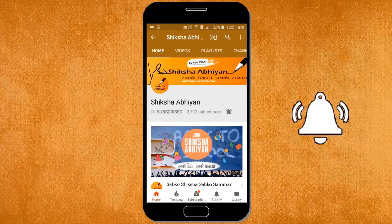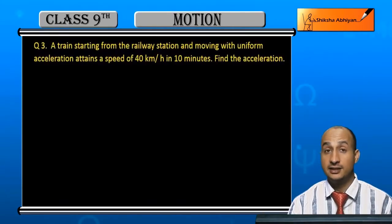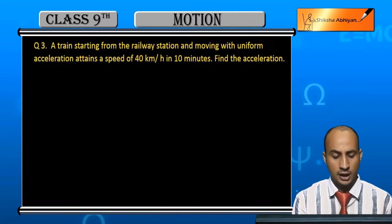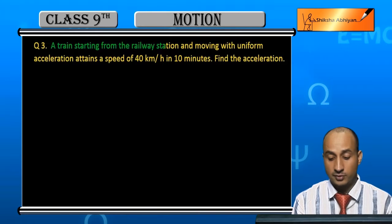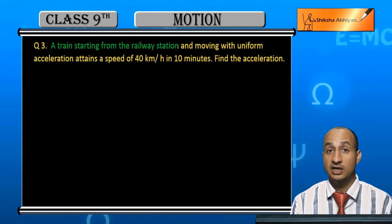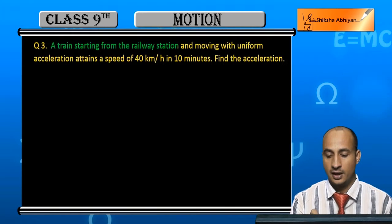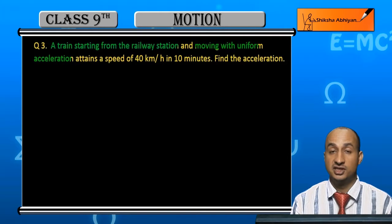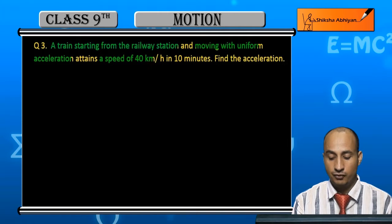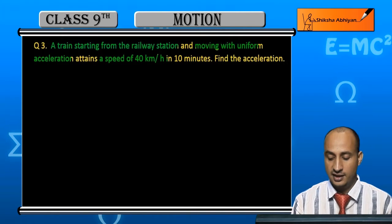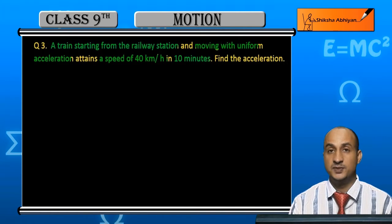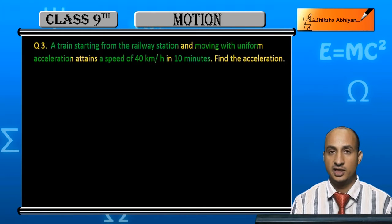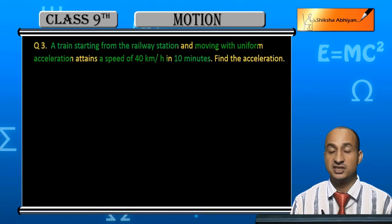Now students, see the question. A train starting from the railway station and moving with uniform acceleration attains a speed of 40 km per hour in 10 minutes. The train starts from rest.